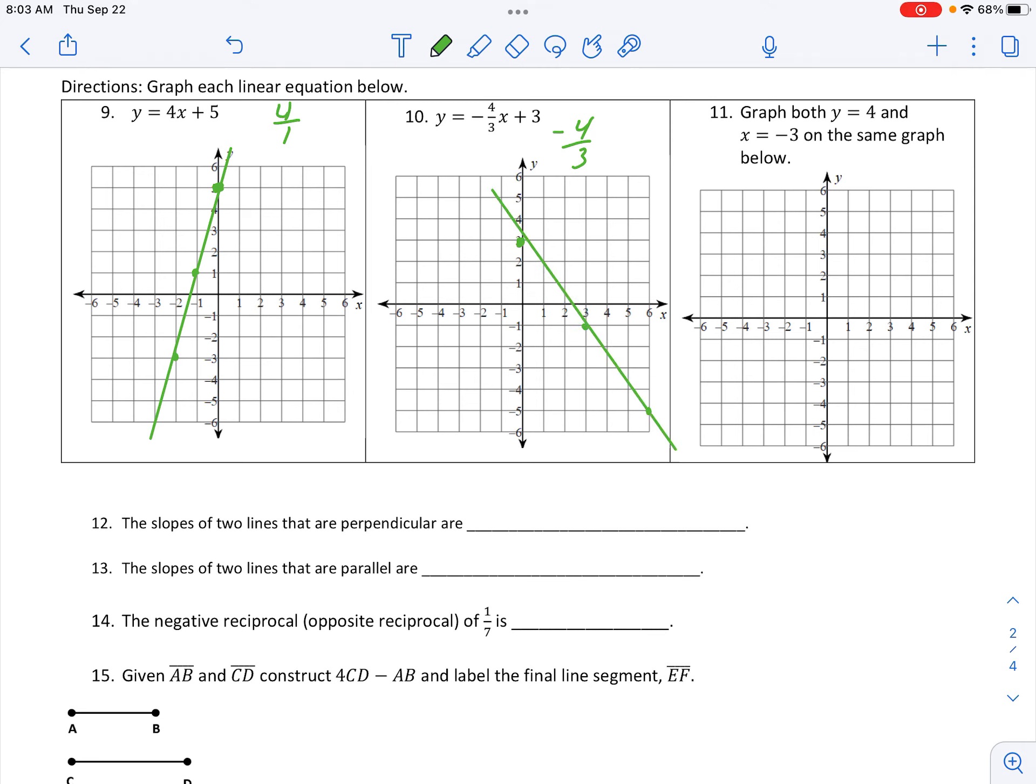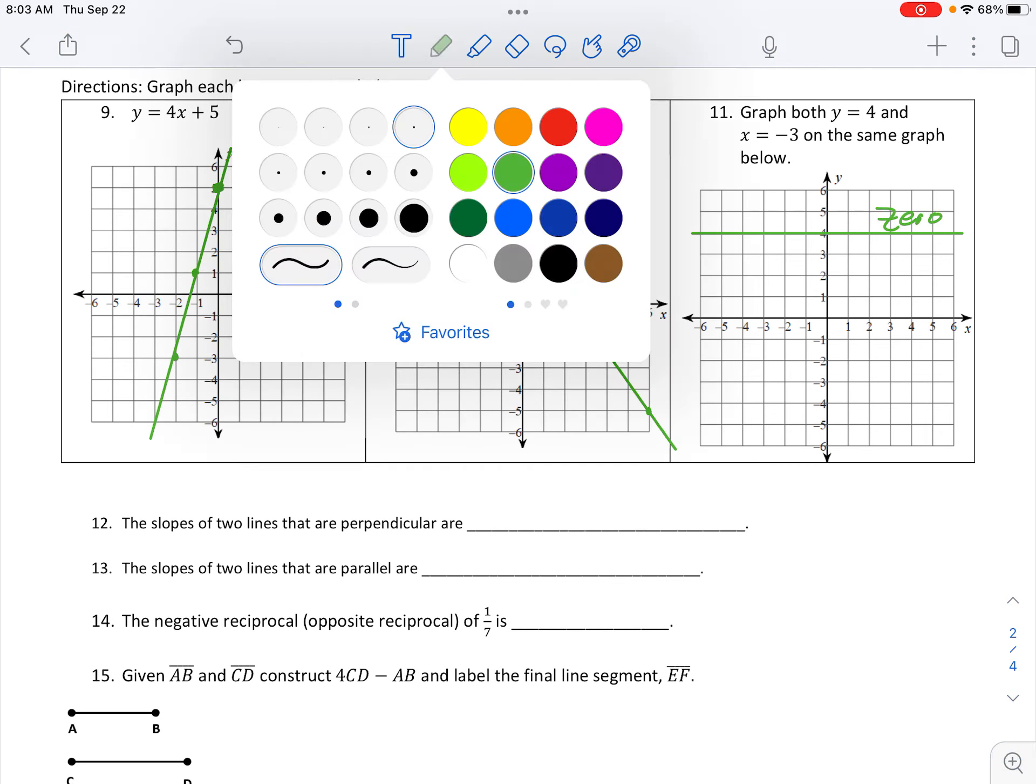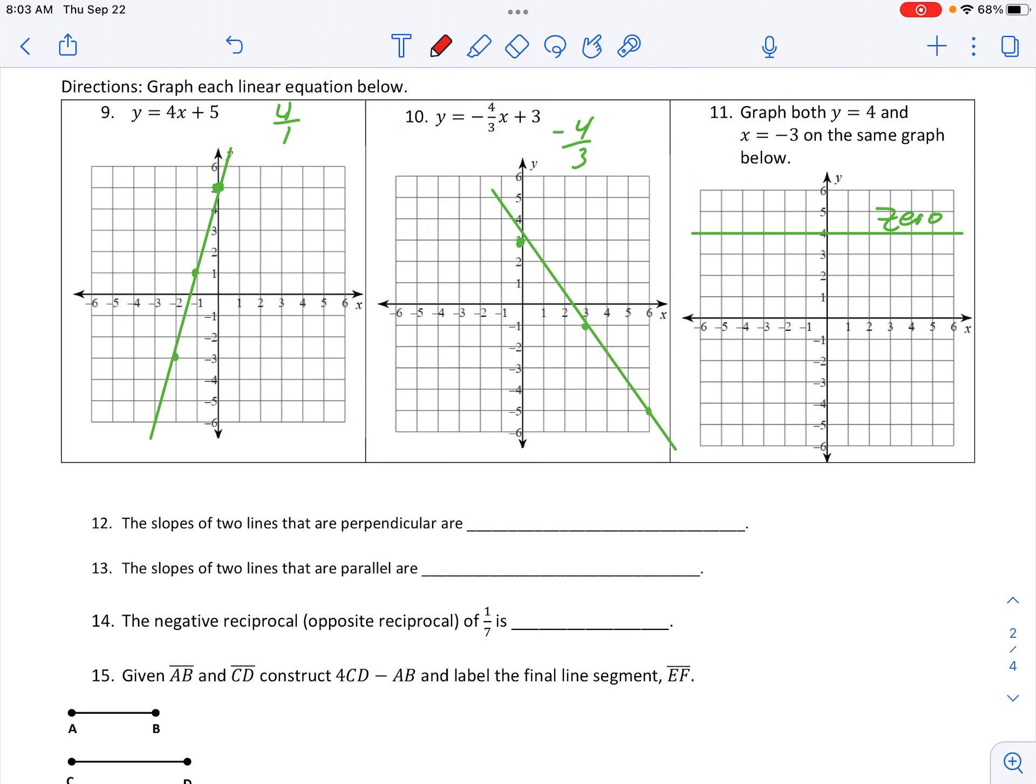The other ones: when I see y equals four, no x, that should key in that's one of our special cases. That's a horizontal and my slope is always zero.